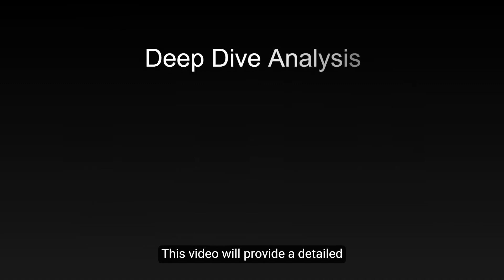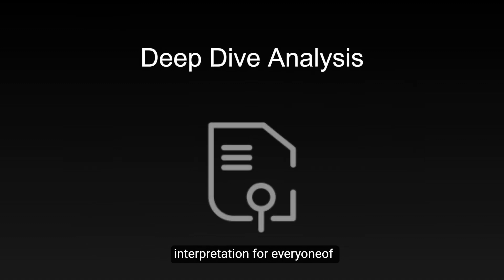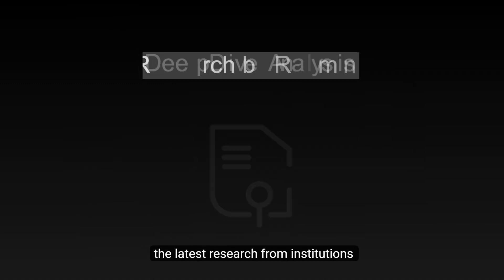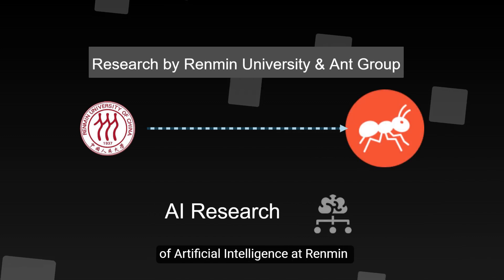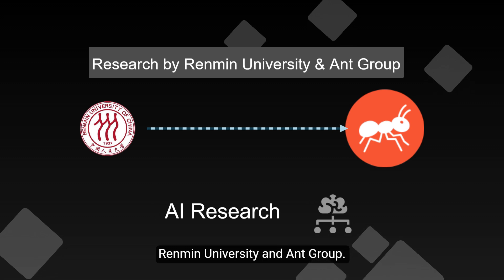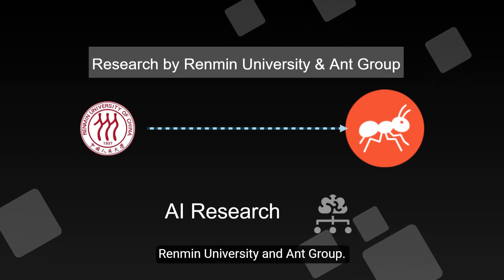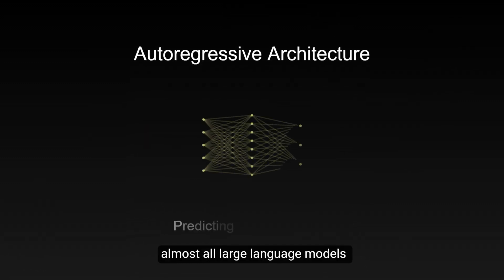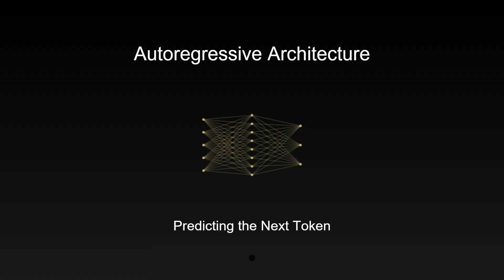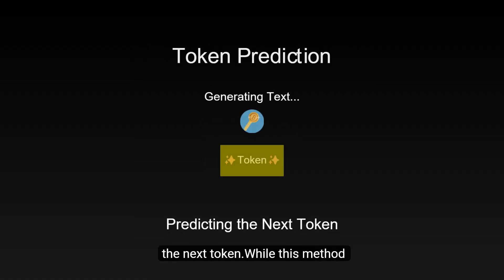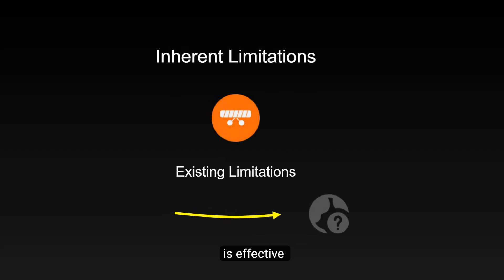This video will provide a detailed interpretation of the latest research from institutions such as the Jailing School of Artificial Intelligence at Rindman University and Ant Group. Currently, almost all large language models use an autoregressive architecture, which generates text by predicting the next token. While this method is effective, it has some inherent limitations.